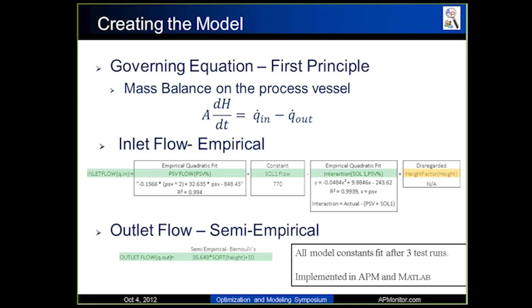And so that was the semi-empirical model. You put these two models together, the Q_in and the Q_out, into the governing equation, and that becomes the model that we're using. And so all these model constants were fixed after about three test runs. And so we used these models to be implemented into APM and with MATLAB.